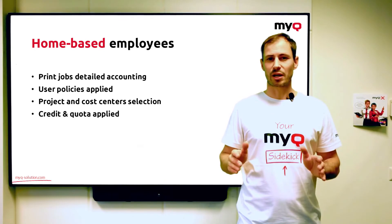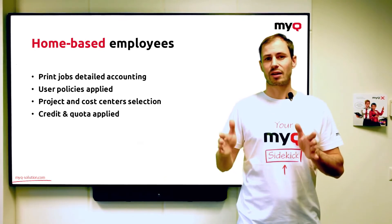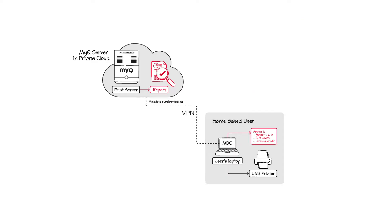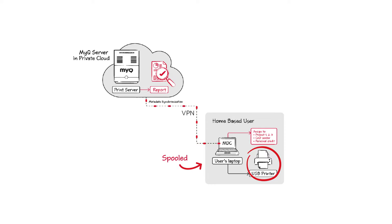The MyQ desktop client can work not only with network devices but also with USB or LPT connected devices. The user's PC must be connected to the print server at least via VPN. The jobs are spooled completely locally, so there is no large data transfer between the MDC and the print server.